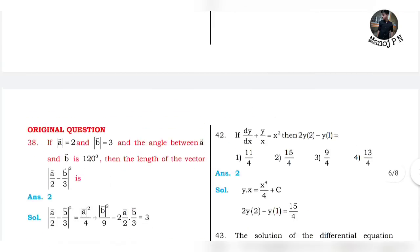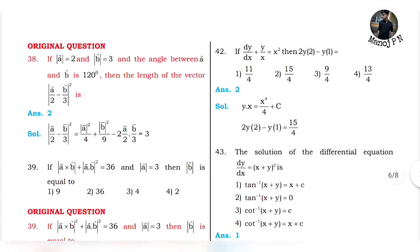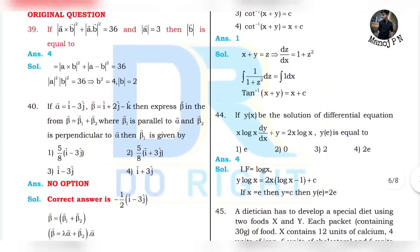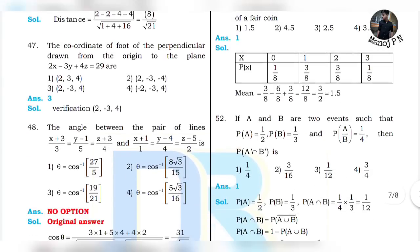41 is option 3. And then 44 is... Once again. 42 is 2. 43 is 1. 44 is 4. And then 45 is 1. 46 is 1. 47 is 3.